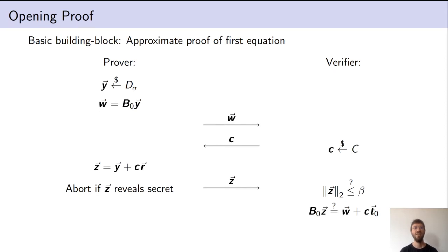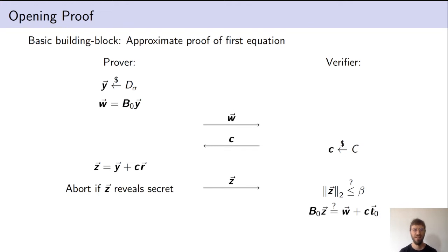Essentially all efficient zero-knowledge proofs about this commitment scheme have an underlying building block: an approximate proof for the first equation, which we call the opening proof, since it shows one knows an opening for the commitment. Starting from this building block, knowledge proof systems add additional features to this opening proof. Since we give a new analysis of the opening proof that is crucial for our product proof, I will now describe it.